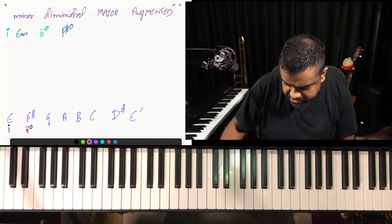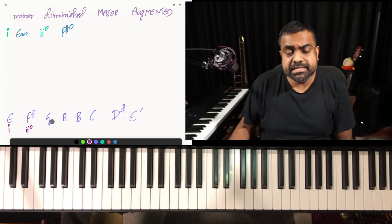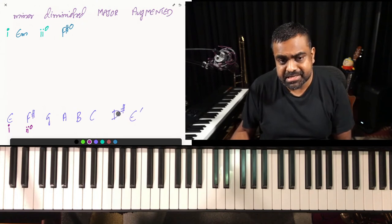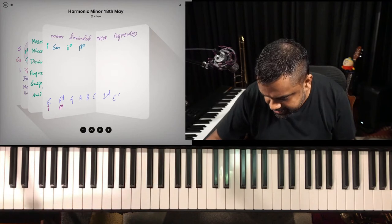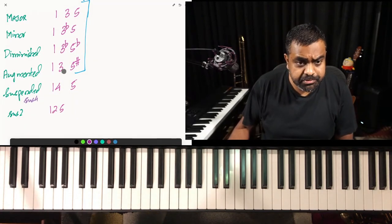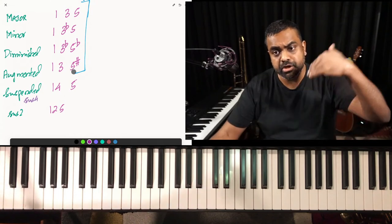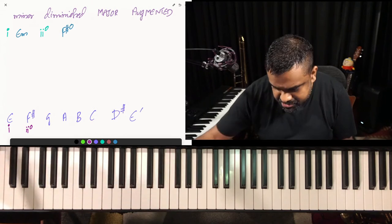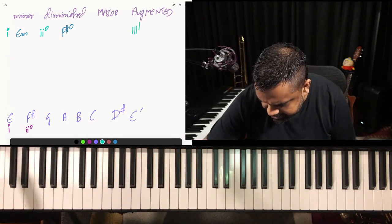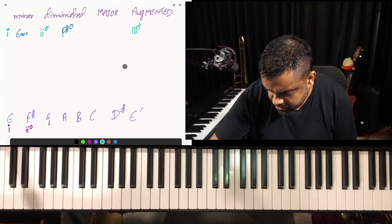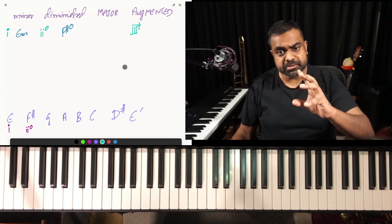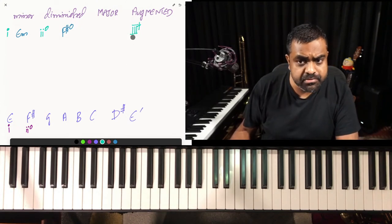The third degree is an interesting chord. It's not G major — you might think G, B, then expect a D, but this is D#. An augmented chord has a sharp five, so this is G augmented. We write it as three-flat augmented — small Roman, big Roman plus. The G is the flat-three of the E major scale, so we represent it as flat-three augmented.